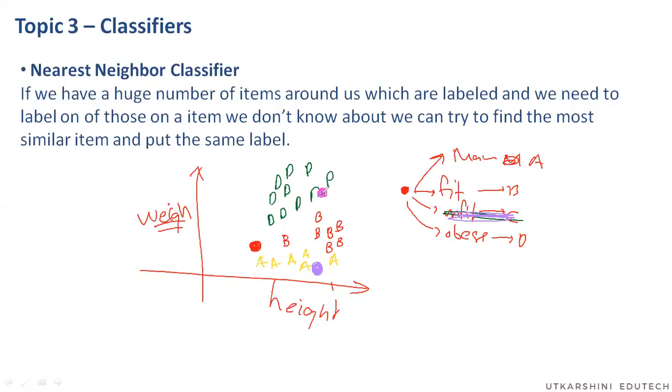So this person is obese, person D. This particular person has A as the nearest one, so we have this one as A, which is malnutrition.